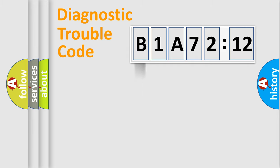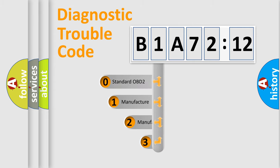Powertrain, body, chassis, network. This distribution is defined in the first character code.